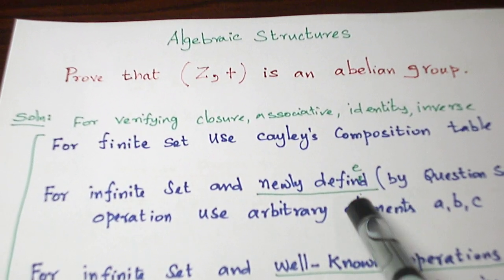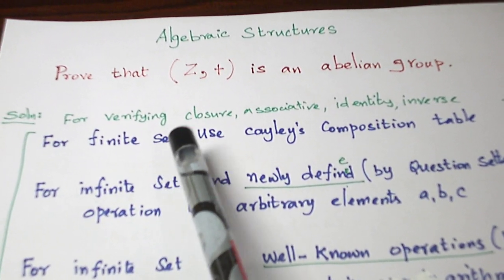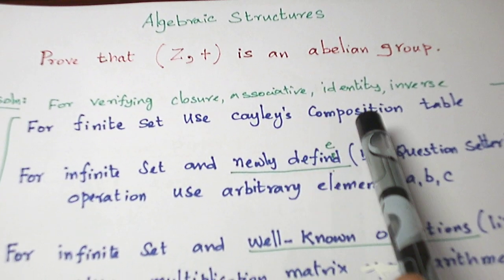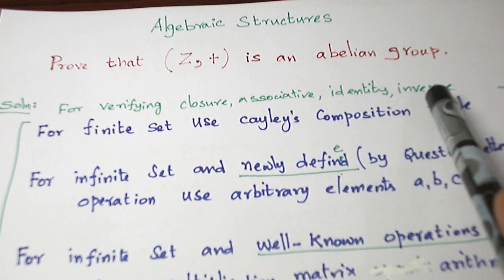We have to prove that the set of integers under usual addition is an abelian group. Actually we have three different techniques. Suppose the set given is a finite set, we are going to use Cayley's composition table to verify the four properties: closure, associative, identity and inverse.